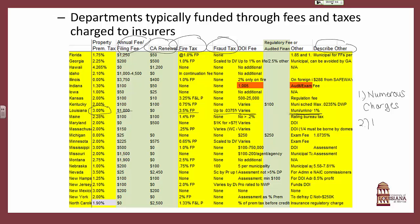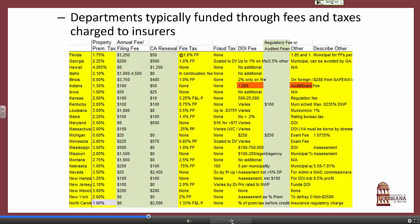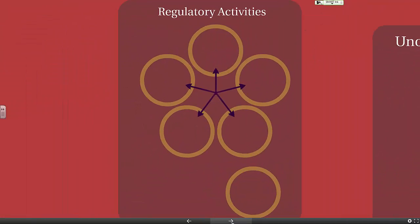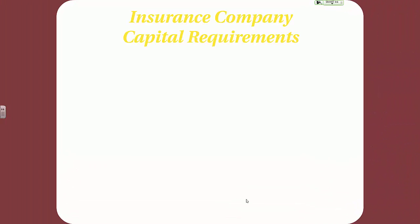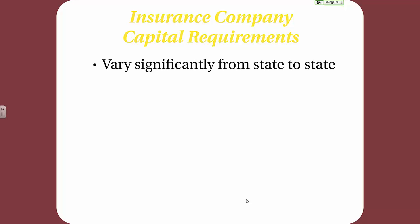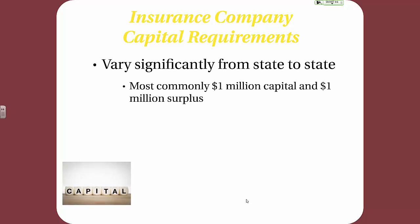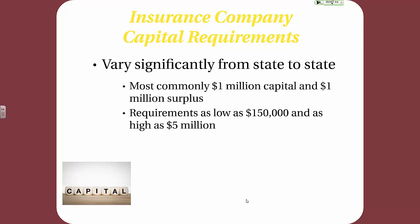Now let's take a closer look at regulatory activities conducted by the states. We'll start with capital requirements. Insurance companies are required to carry a certain amount of capital when they first start and as they continue operations — these requirements vary greatly from state to state. Most commonly, states require a million dollars in capital and a million dollars in surplus. For mutual companies, they only are required to carry surplus since they do not have capital provided by shareholders. Requirements can range from as low as $150,000 in one state to as high as $5 million in another.